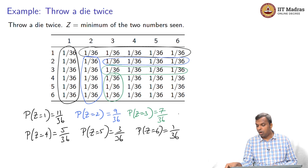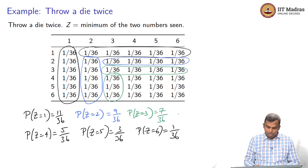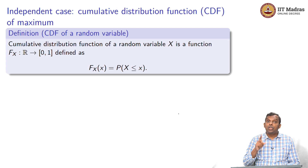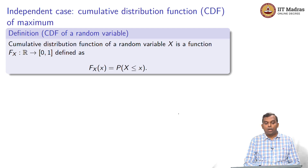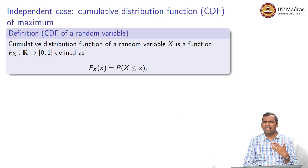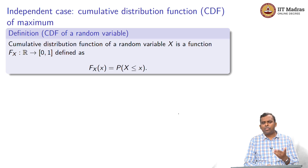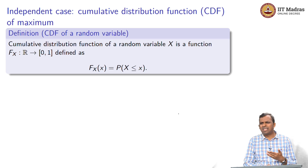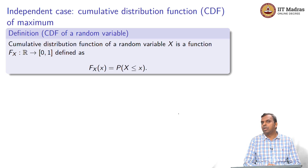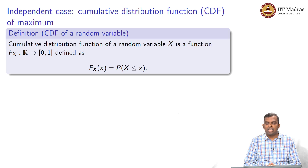It turns out for minimum and maximum, particularly if the two random variables are independent, the cumulative distribution function of the maximum is very easy to write down. So far we have not mentioned the CDF too much. In the discrete case, PMF is quite good and you do not need CDF too much. But when you want to find the distribution of the maximum, particularly in the independent case, you will see the CDF will wonderfully simplify things.